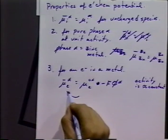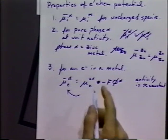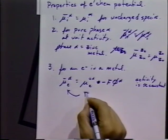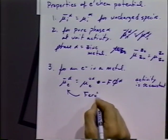The other thing to think about is that the electrochemical potential of the electrons in phase alpha is another way of saying the Fermi level.